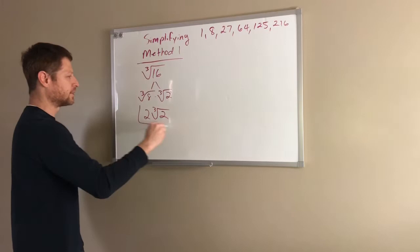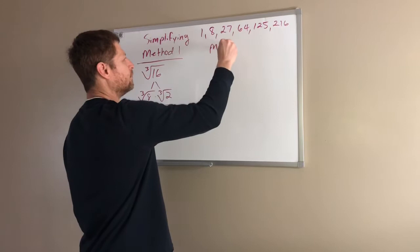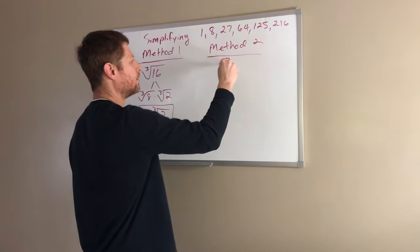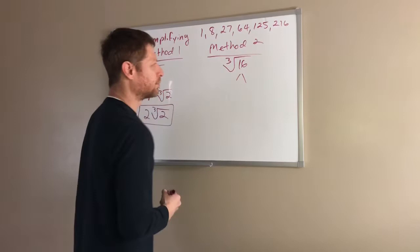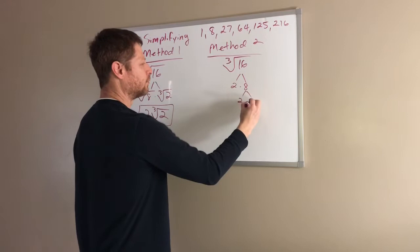We move on to method number 2, where we once again start with the cube root of 16. And this one we are breaking it down into all of its primes: 16 would be 2 times 8, 8 would be 2 times 4, and then finally 4 is 2 times 2 as far as we can break it down.